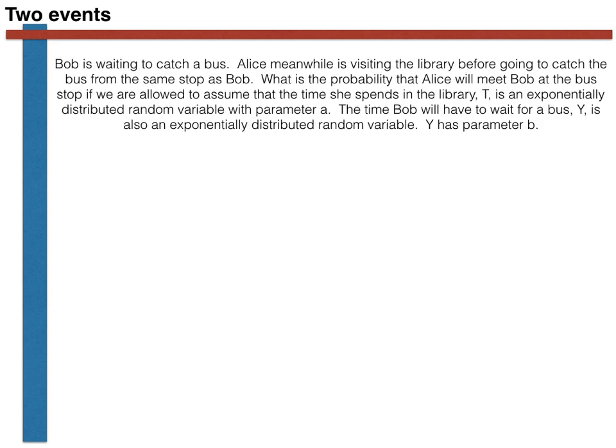The question in this case runs as follows: Bob is waiting to catch a bus. Alice meanwhile is visiting the library before going to catch the bus from the same stop as Bob. What is the probability that Alice will meet Bob at the bus stop if we are allowed to assume that the time she spends in the library, T, is an exponentially distributed random variable with parameter a. The time Bob will have to wait for a bus, Y, is also an exponentially distributed random variable, with parameter b.